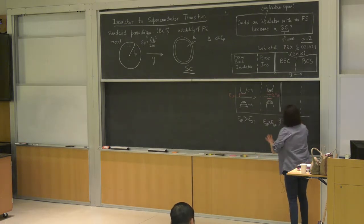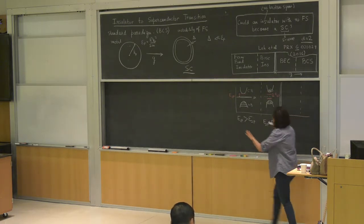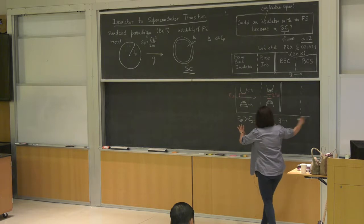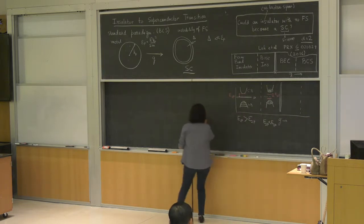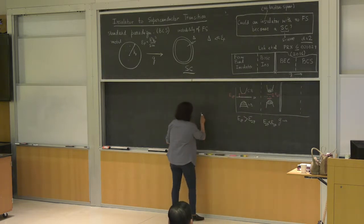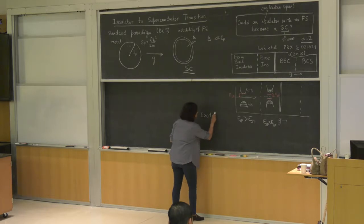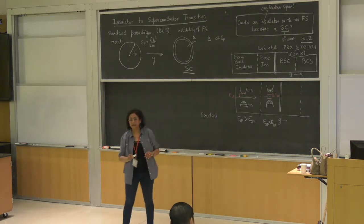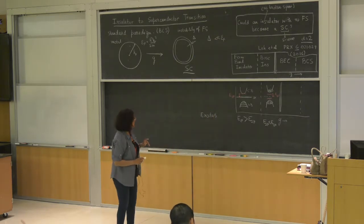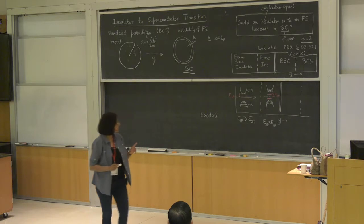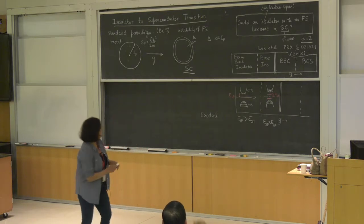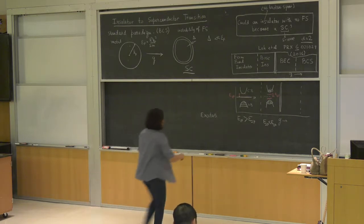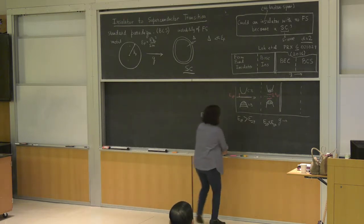The two-particle scale becomes less than the one-particle scale — it becomes cheaper to create two particles or remove two particles compared to adding or removing one particle. That is what I call a Bosonic insulator. I'm describing all these phases through their excitation spectrum.